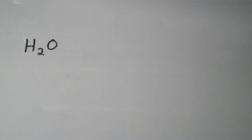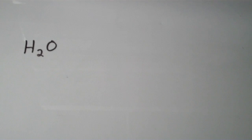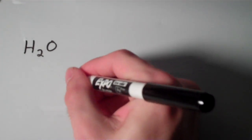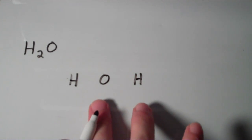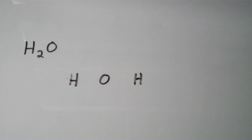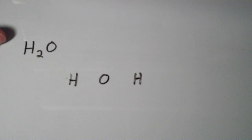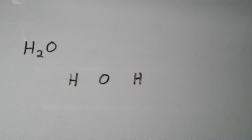Let's practice some Lewis structures. Let's start with H2O. The first step is to write the correct skeletal structure of the molecule, and the only skeletal structure that makes any sense is the oxygen atom in the center and the hydrogen atoms terminal. The reason why this is the only structure that makes sense is because hydrogen achieves a duet by forming only one bond — hydrogen cannot bond to two atoms, so hydrogens have to be terminal.